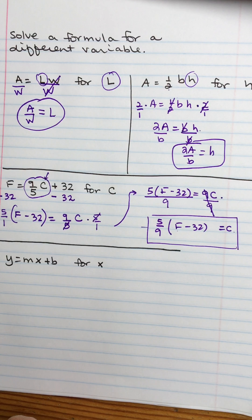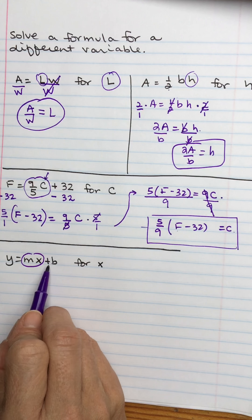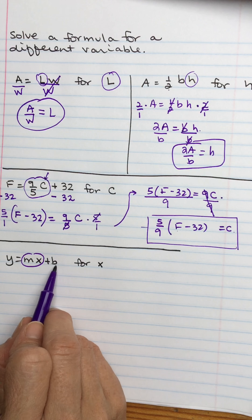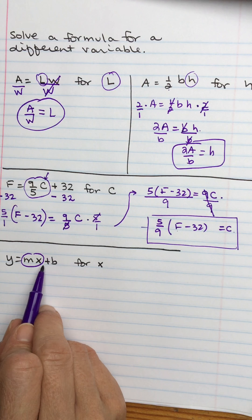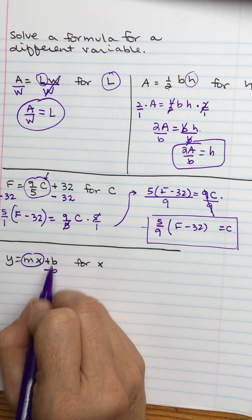Last example, y equals mx plus b. This is the equation of a line, and we want to solve for x this time. So again, you're going to isolate the term with the x in it first. So this b, I'm going to get rid of that entire term.